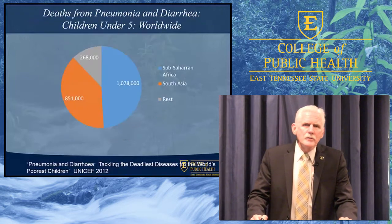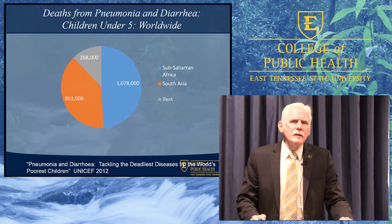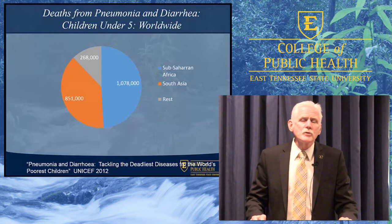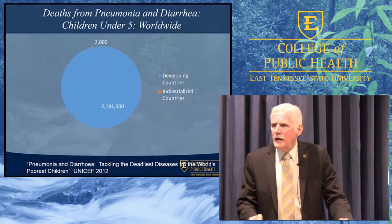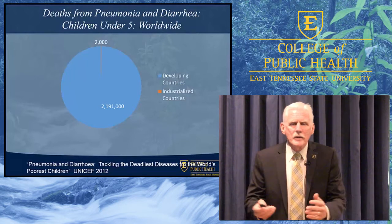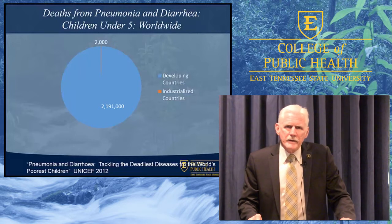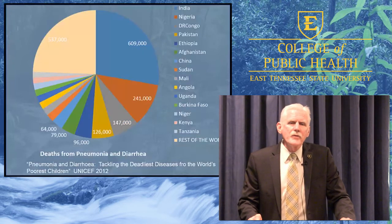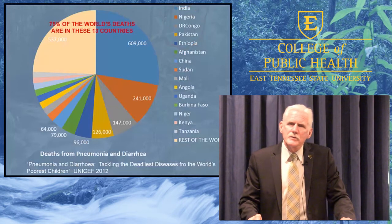As you might expect, deaths due to pneumonia and diarrhea are not evenly distributed, with about half taking place in sub-Saharan Africa and most of the rest in South Asia. This next pie chart is almost mind-boggling — it shows deaths due to pneumonia and diarrhea in industrialized versus developing countries, and it's so uneven you can almost not see industrialized countries. In fact, half of all deaths due to pneumonia and diarrhea occur in just five countries, and three quarters occur in the 13 countries on this list.